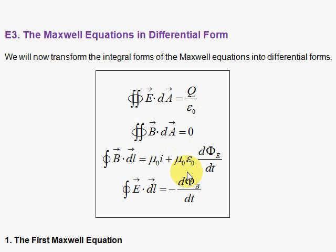We're going to take the integral form of the Maxwell equations and use our two important theorems that we just talked about, the divergence theorem and Stokes theorem, and show that we can transform these to a differential form.